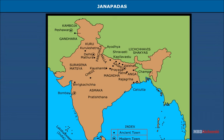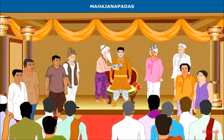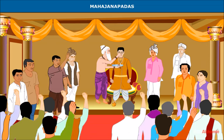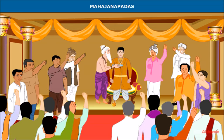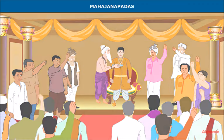The Shakyas and Licchavis were two important republics. In the course of time, some Janapadas conquered neighboring territories and were transformed into powerful kingdoms and republics called Mahajanapadas. A little before Buddha, northern India came to be divided into 16 such Mahajanapadas.